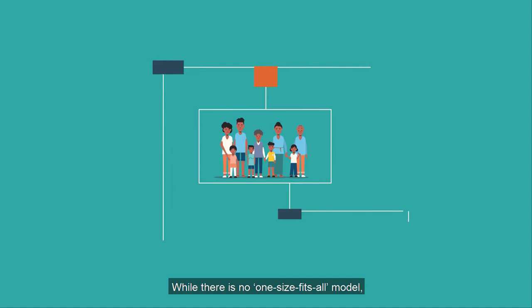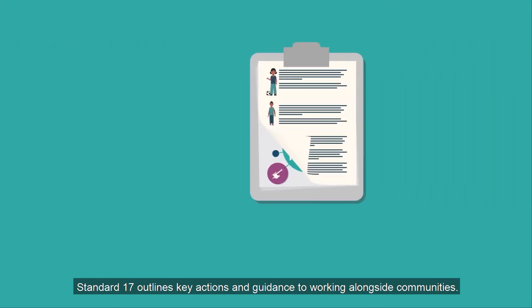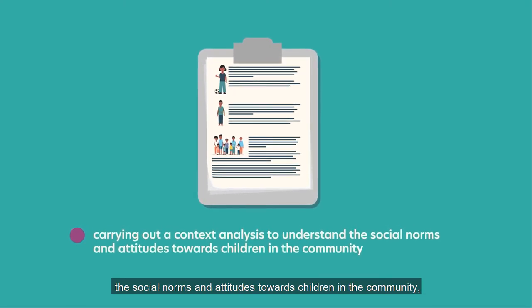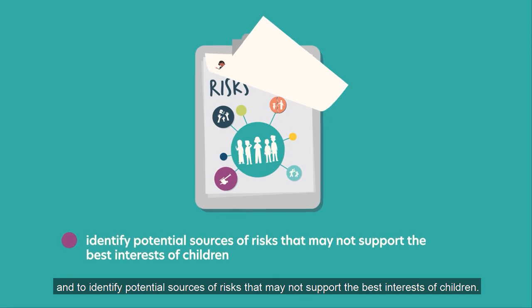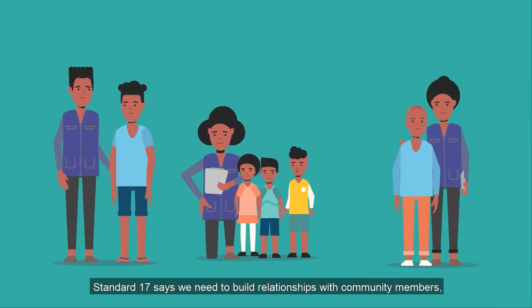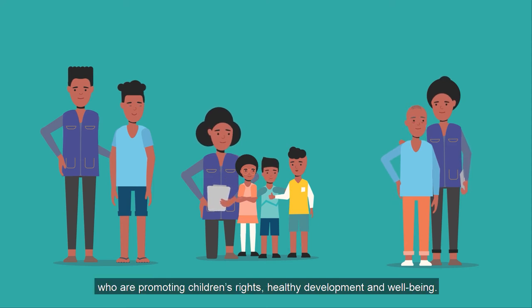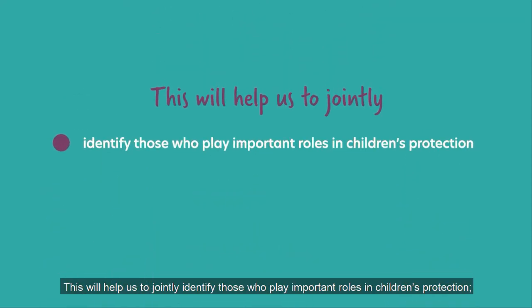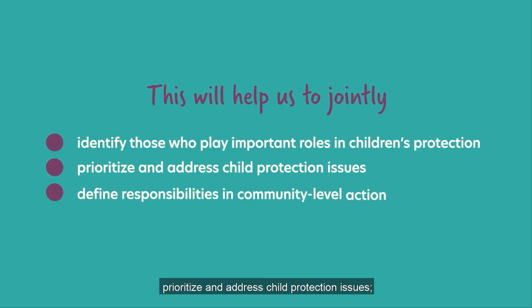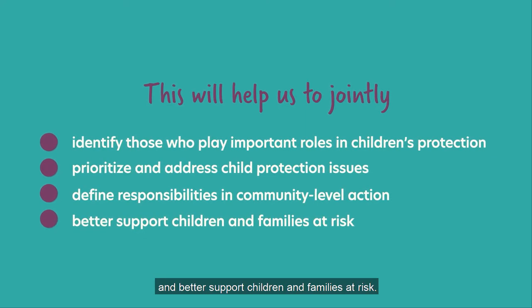While there is no one-size-fits-all model, Standard 17 outlines key actions and guidance for working alongside communities. These actions include carrying out a context analysis to understand the social norms and attitudes towards children in the community, and to identify potential sources of risk that may not support the best interests of children. Standard 17 says we need to build relationships with community members, caregivers and children like Nina who are promoting children's rights, healthy development and well-being. This will help us to jointly identify those who play important roles in children's protection, prioritise and address child protection issues, define responsibilities in community-level action and better support children and families at risk.